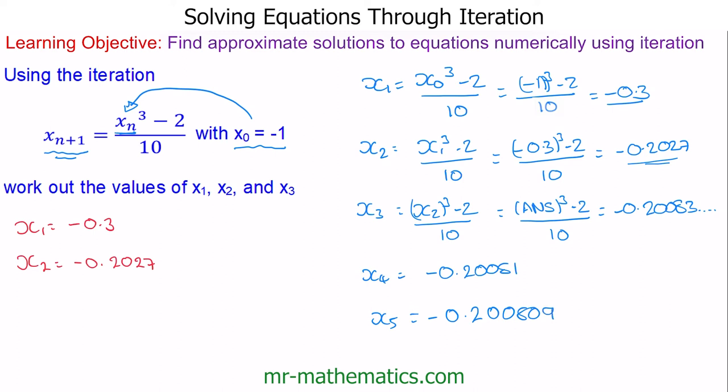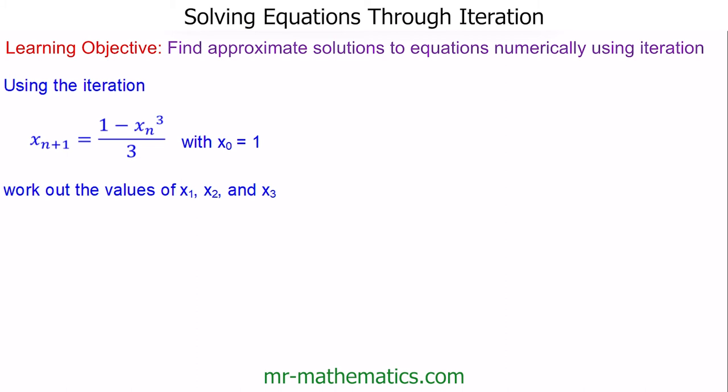Let's try the next question. In this question, we've been given our initial value x₀ = 1. Now we work out x₁, which is our next iteration: 1 - xₙ³/3. Substituting in x₀, we get 1 - 1³/3, which gives us 0.